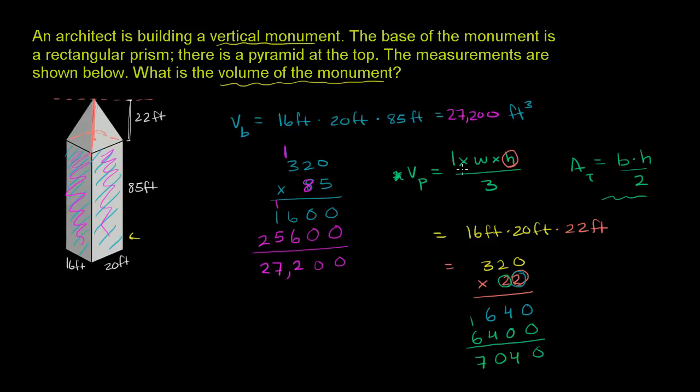So the numerator right over here, the numerator of the length times the width times the height is 7,040, but we actually have to divide it by 3. If we just left it this, this would be the volume of a cube of those dimensions, but we care about a pyramid. So we actually have to divide it by 3.